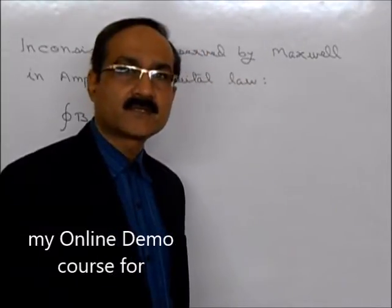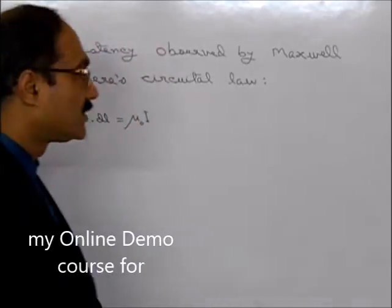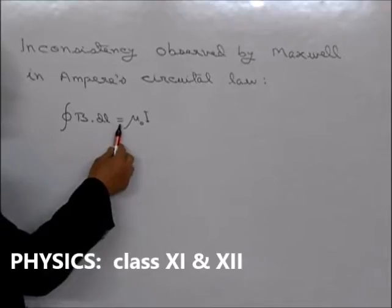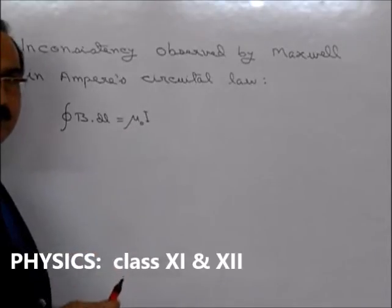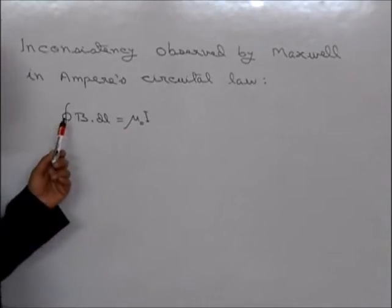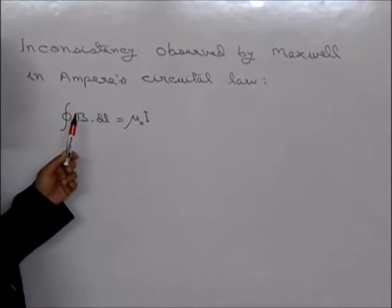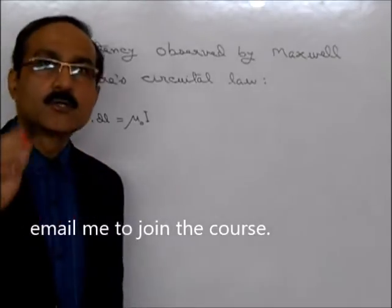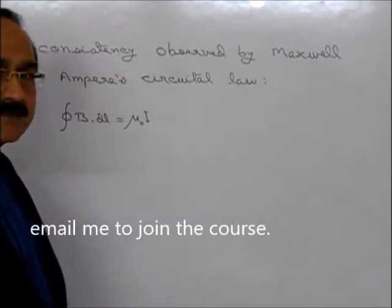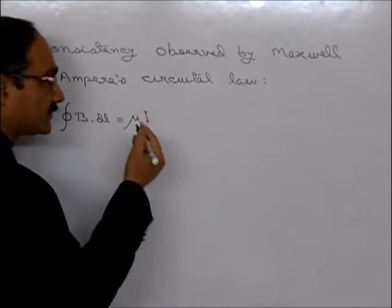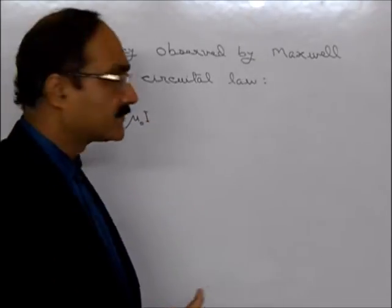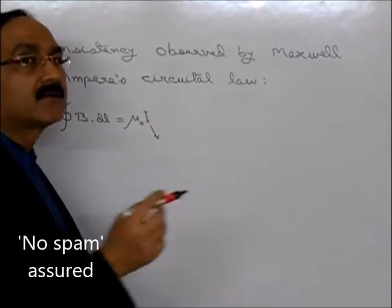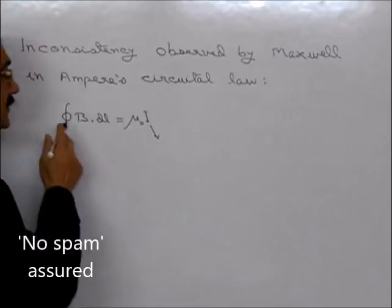First, what is Ampere's circular law? Mathematically, its integration of B dot dl is equal to mu naught times i. This is a closed integration, done along a closed loop. We have to understand clearly about this current i and the integration.